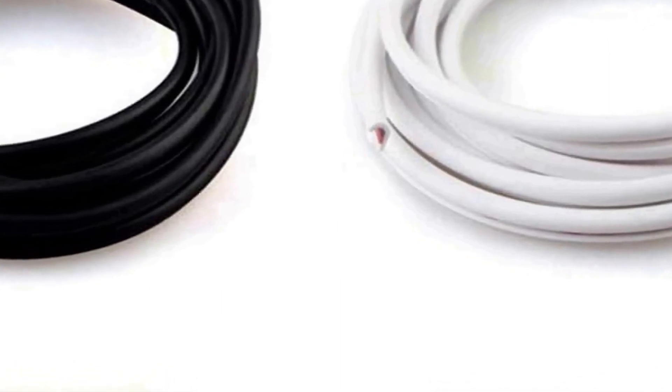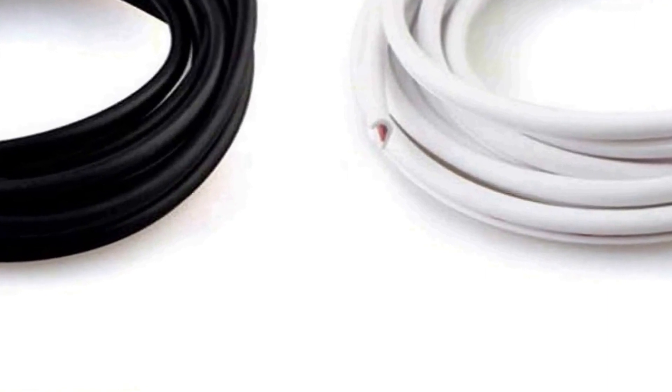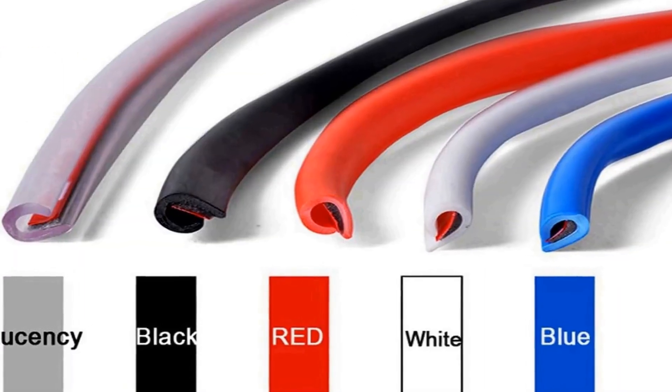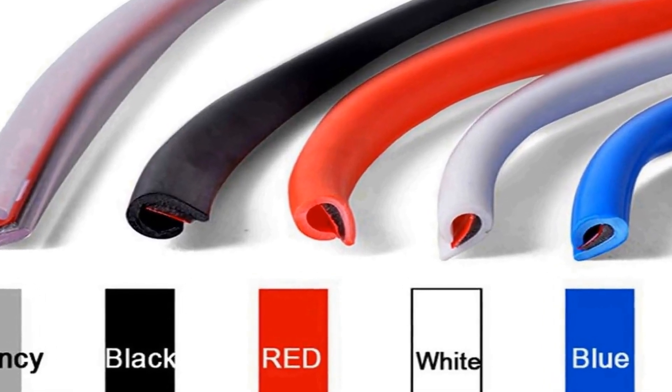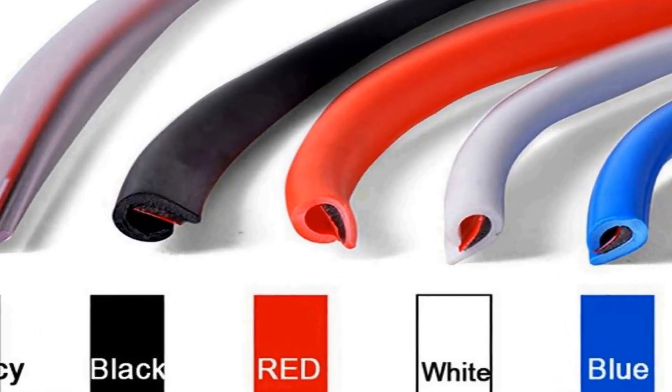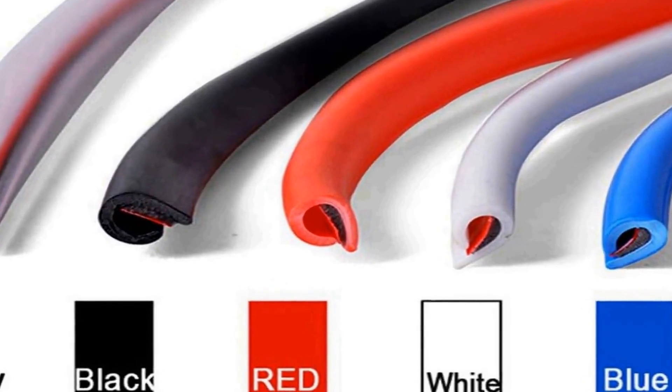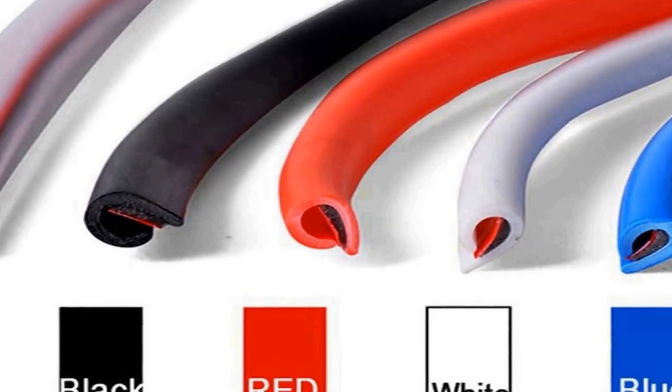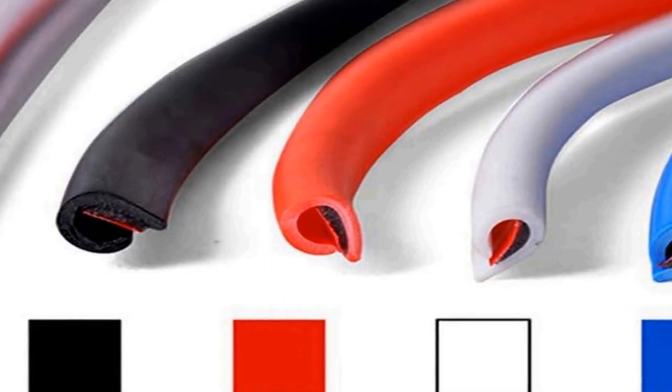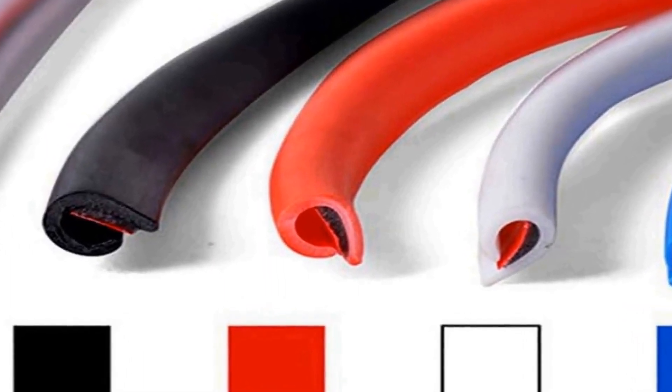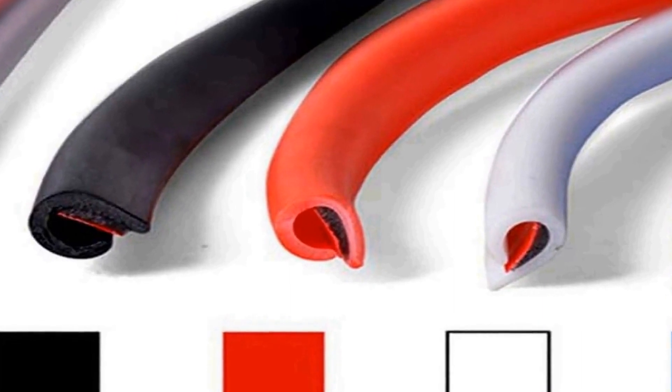The kit is comprised of a flexible and durable material that effectively absorbs impact and resists scratches, ensuring your car's paint and finish remain in pristine condition. These strips are also versatile, as they can be applied to both the front and rear doors, offering comprehensive protection against accidental collisions with walls, pillars, or other vehicles.